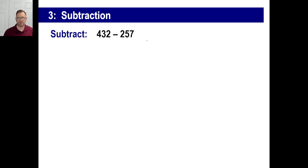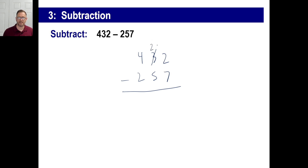The method of subtraction: 432 minus 257. Well, we can't subtract 7 from 2, so we must borrow a 10. So instead of being 32, this number turns out to be 20 — two 10s — and then we have a 12. In other words, 32 is the same thing as 20 plus 12. Now we can work with this. So 12 minus 7 is 5.